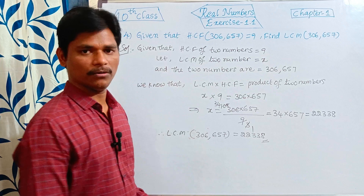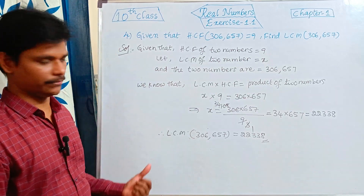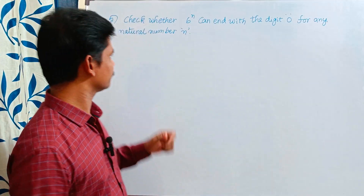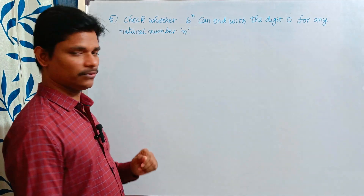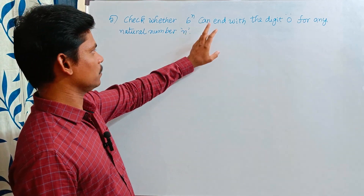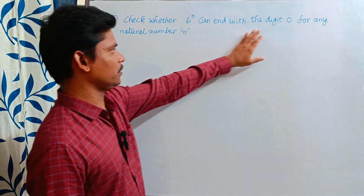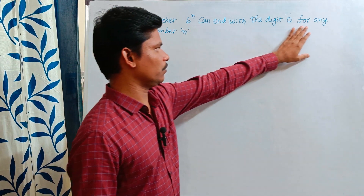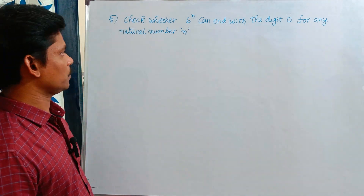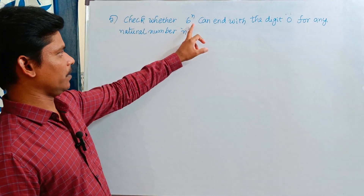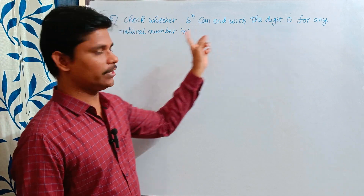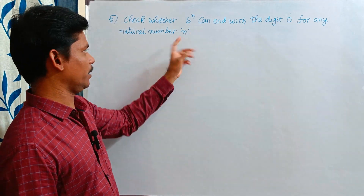This is about the fourth question. Next question, fifth one: check whether 6 power n can end with the digit 0 for any natural number n.